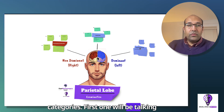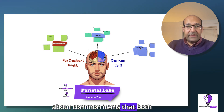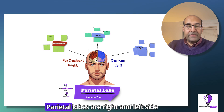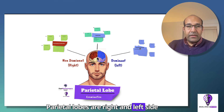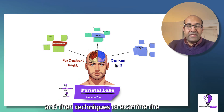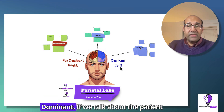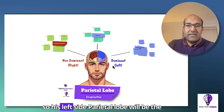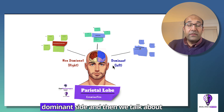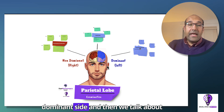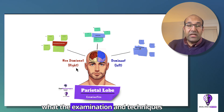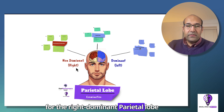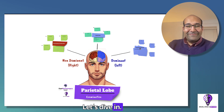First, we'll talk about common items that both parietal lobes — right and left — share, and then techniques to examine the dominant. If the patient is right-handed, his left parietal lobe will be the dominant hemisphere. Then we'll talk about examination techniques for the non-dominant right parietal lobe. Let's dive in.